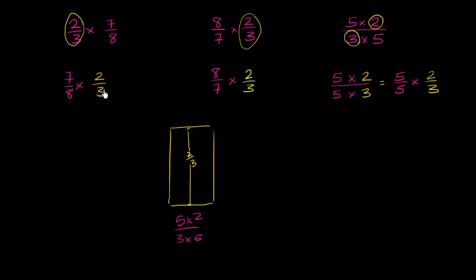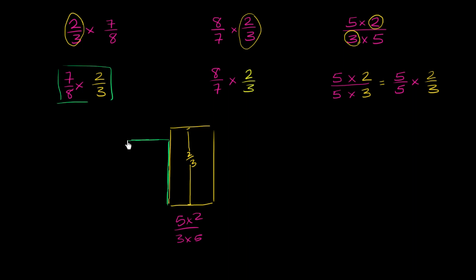Now let's think about 7/8 times 2/3. Since 7/8 is less than 8/8 — less than 1 — we're going to scale 2/3 down. This is going to be 7/8 of 2/3, so it's going to be less than 2/3. If the yellow height is 2/3, then this bar here would be 7/8 times 2/3 — a bit shorter.